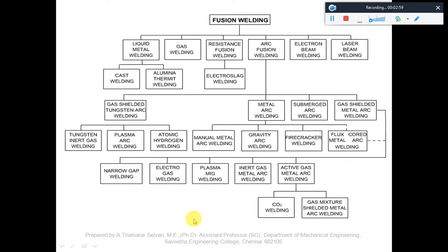In fusion welding, we can use liquid metal welding, gas for welding, or resistance for the fusion of metals to take place, which is called electroslag welding, arc fusion welding, electron beam welding, and laser welding. In all these cases the metal melts and fuses together so that they can be joined. In arc fusion welding, we have metal arc welding — which can be manual metal arc, gravity arc, firecracker welding, or flux-cored metal arc welding — and gas shielded tungsten arc welding, including tungsten inert gas welding, plasma arc welding, and atomic hydrogen welding.